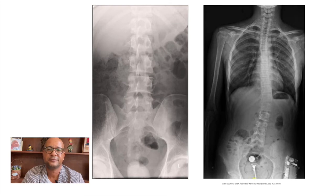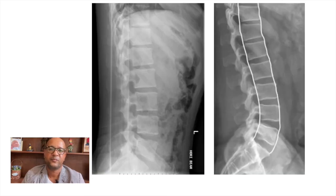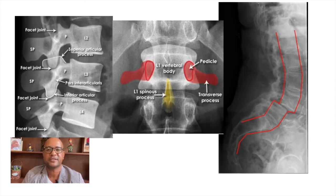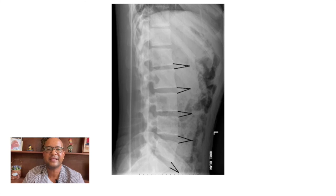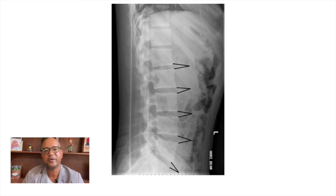The lateral view is the best projection for showing loss of disc space, degenerative changes, or subluxation. One should first check for alignment of the vertebral bodies, and then each vertebral body, disc space, posterior elements, and transverse processes. Disc spaces should gradually increase in height from superior to inferior in the lumbar spine, with the exception of the L5–S1 space, which is sometimes less than L4–L5. The pedicles gradually become wider from superior to inferior.